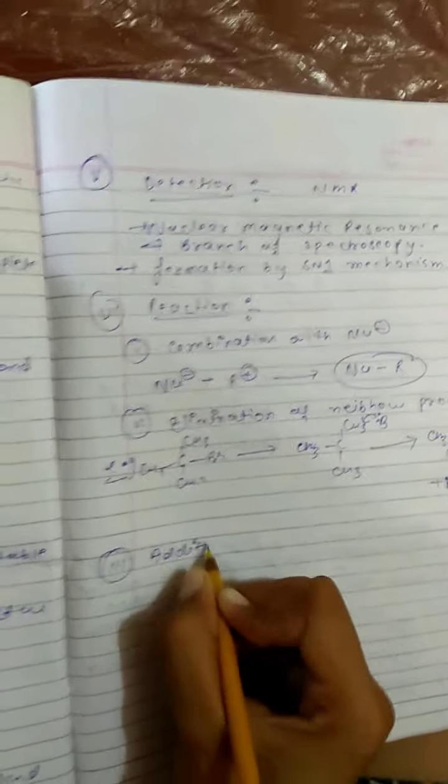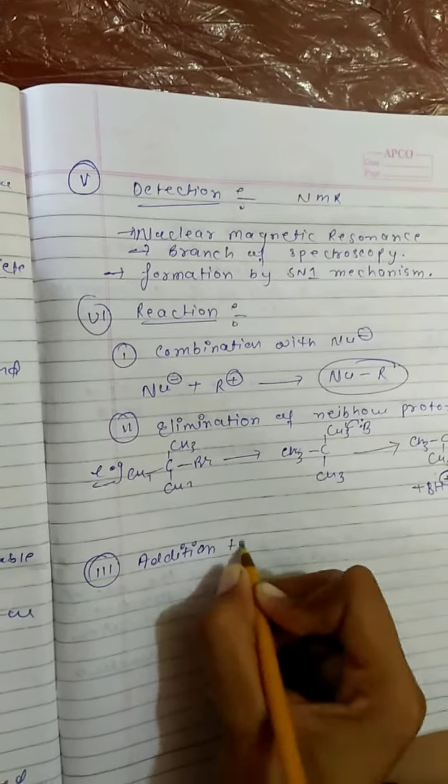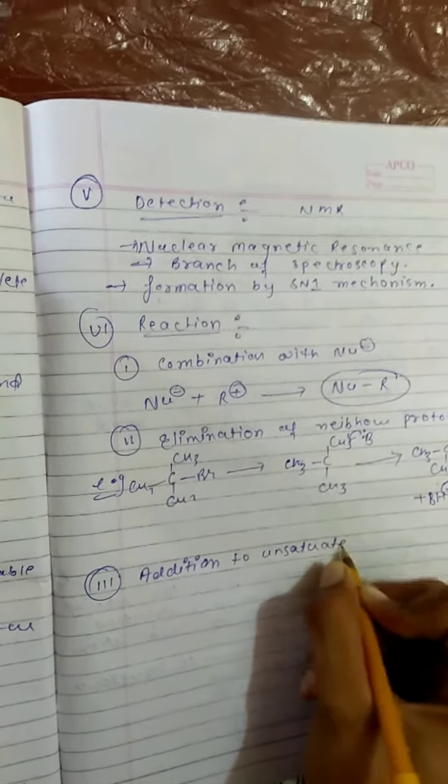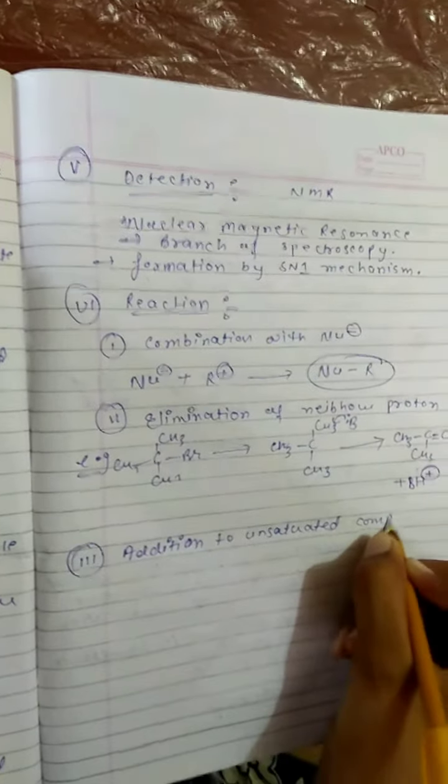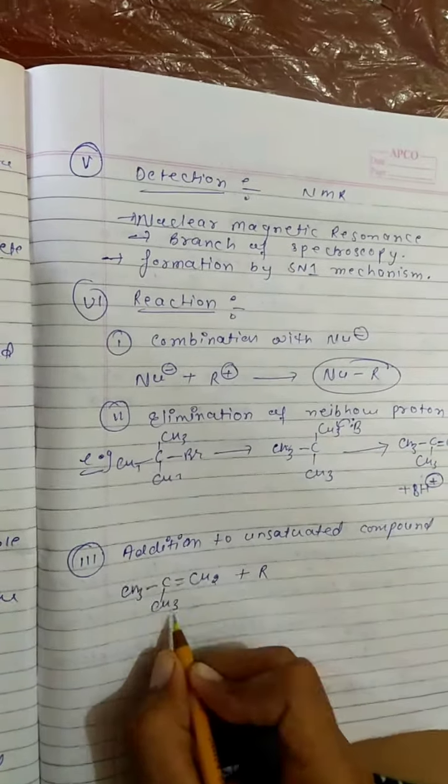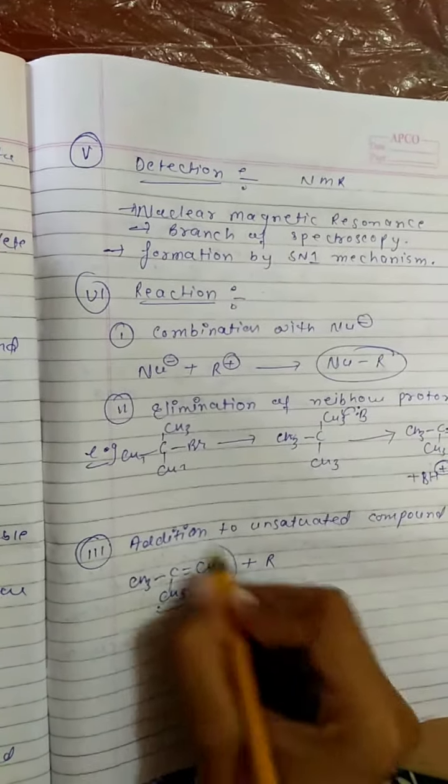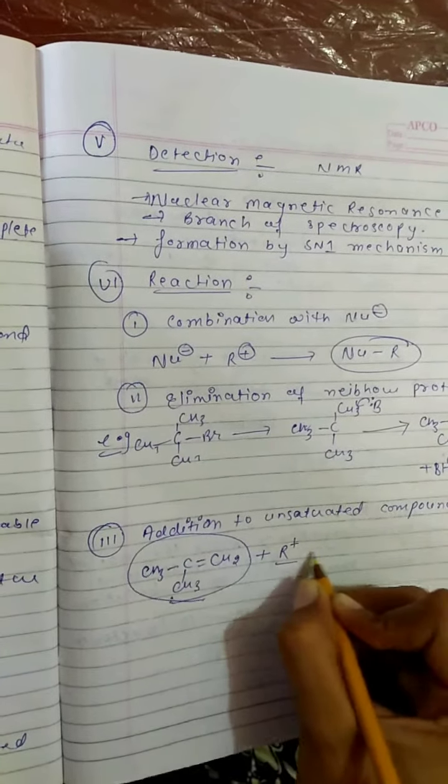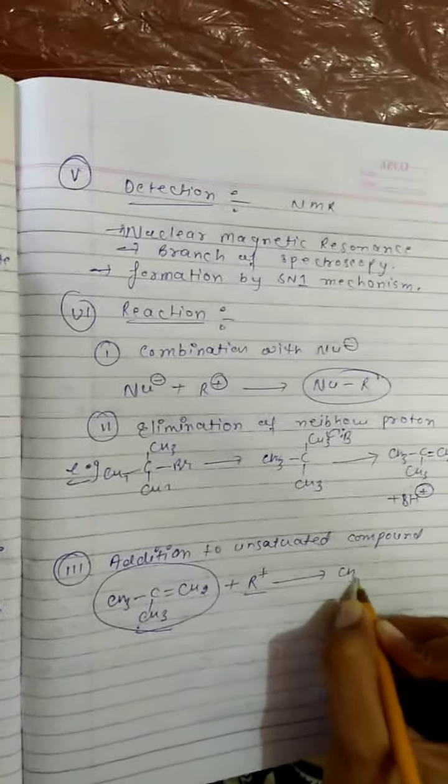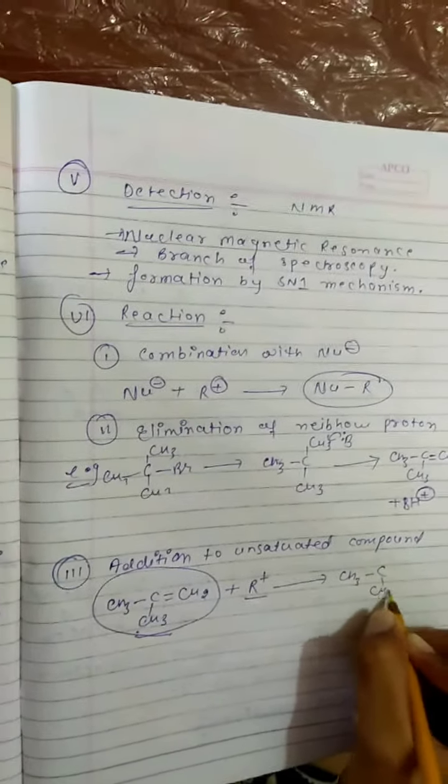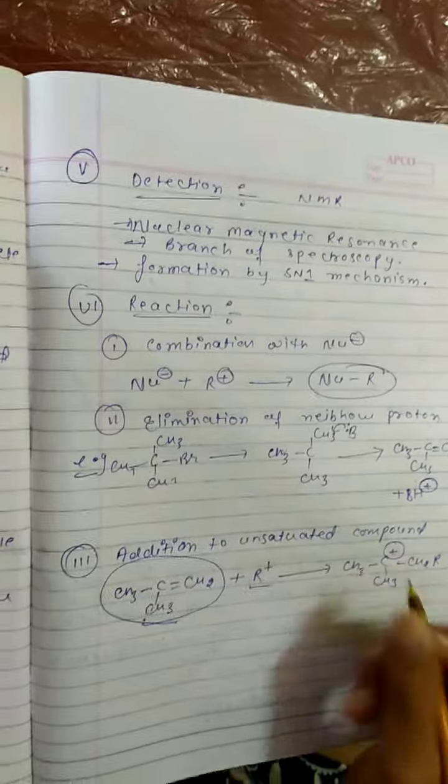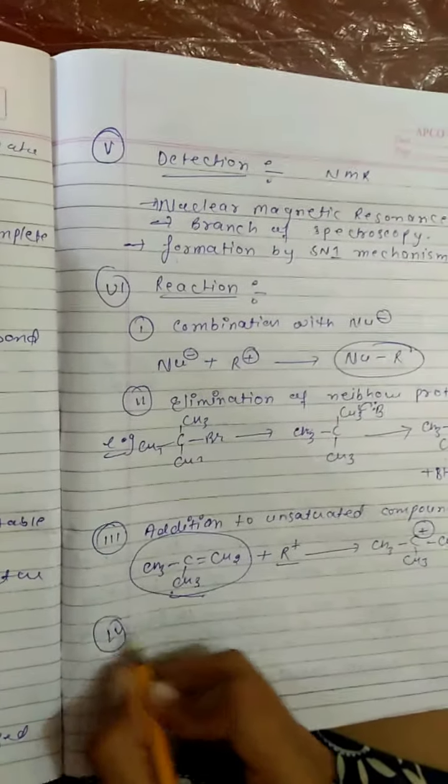Third one is addition to unsaturated compound. Take an example of unsaturated compound - unsaturated means they should have a double or triple bond. As unsaturated compounds react with any carbocation, then it forms a saturated carbocation. This is a reaction of carbocation.